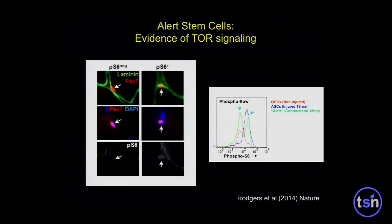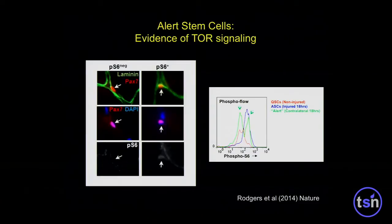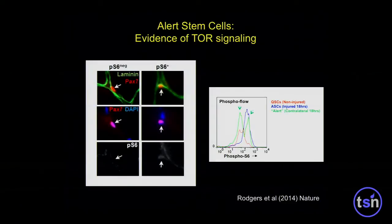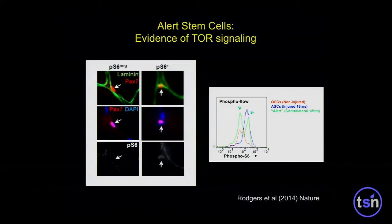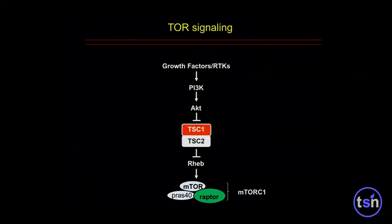Looking at TOR signaling — an important regulator of cell growth — in quiescent muscle stem cells, staining for phospho-S6 kinase, a marker of TOR signaling, is absent in the control. But he could see staining for phospho-S6 kinase in these alert stem cells. By flow cytometry: quiescent cells are shown in red, activated cells in blue showing a lot of increased phospho-S6, and alert cells in green show two peaks — one at the quiescent level and one at the activated level. So TOR signaling is increased quite a bit in these cells, perhaps accounting for the increase in size.